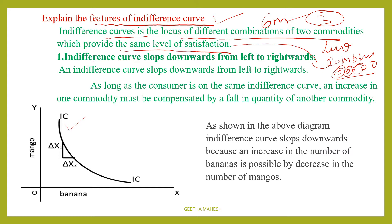The first feature is: the Indifference Curve slopes downwards from left to right. If you observe the left side and the right side, that is the downward slope. The first point is the Indifference Curve slopes from left to right downwards.